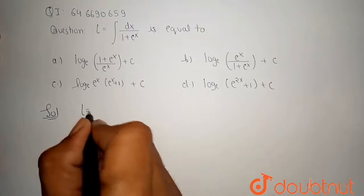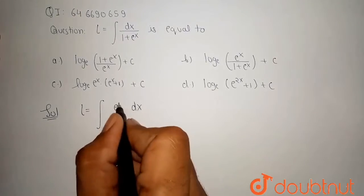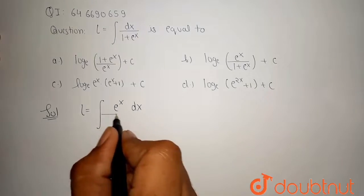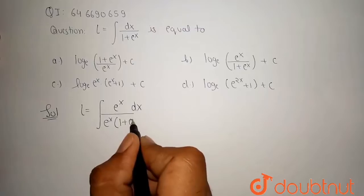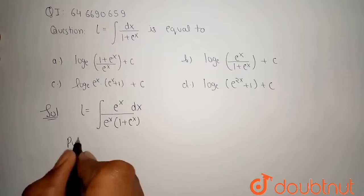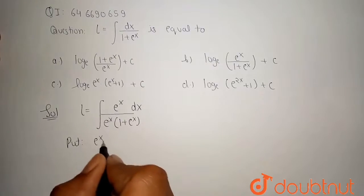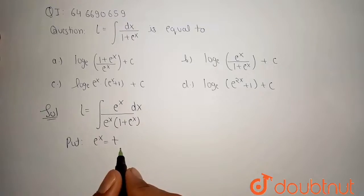Now, I is equal to integration of dx. I can multiply e to the power x in the numerator and the denominator, and the denominator term 1 plus e to the power x remains the same. And I can use a substitution. I can put e to the power x is equal to t, and differentiate both sides with respect to x.